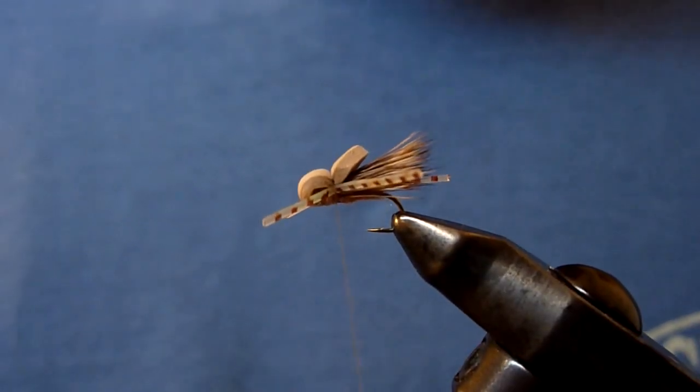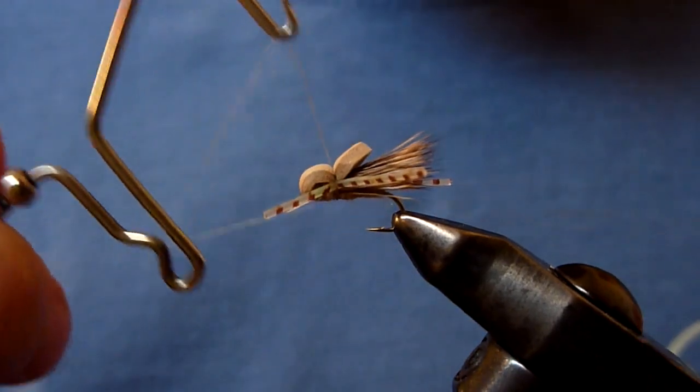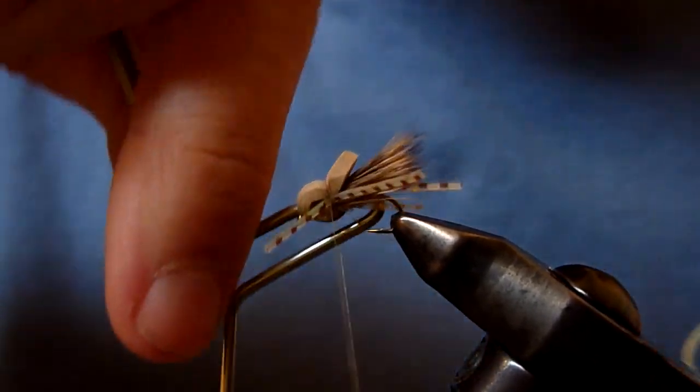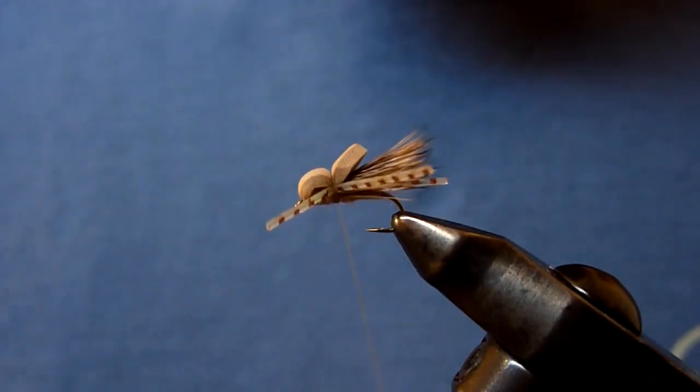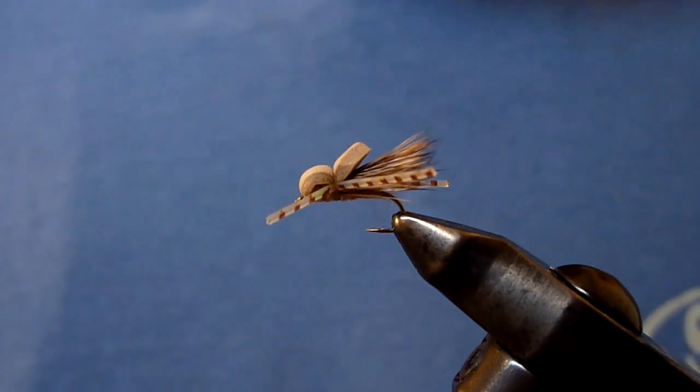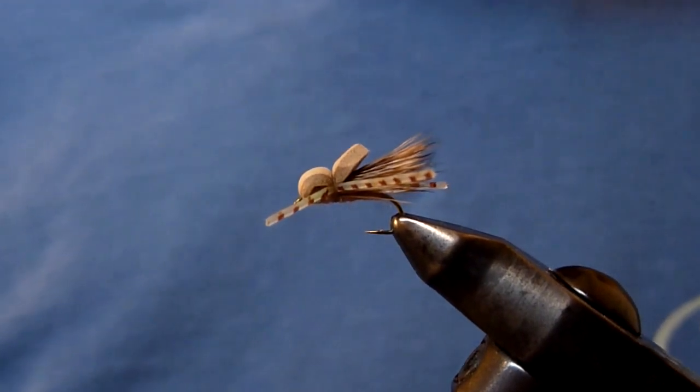Now we're just going to throw on a quick whip finish. Clip the thread. And there you have the Arizona Wanderings Mini Hopper.